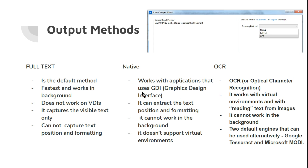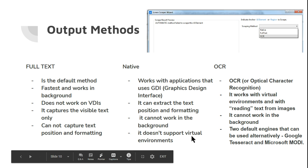The Native method works with applications that utilize the Graphics Design Interface (GDI), which is a Microsoft interface. It can extract text position and formatting — so if you want to capture the color of the text and similar details, you use the Native option. However, it does not support virtual environments, and it cannot work in the background; it has to be in the foreground.